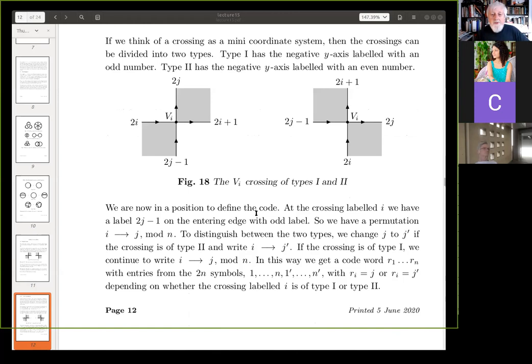So we are now in a position to define the code at the crossing labeled I, we have a label 2J minus one on the entering edge with odd label. So we have a permutation. I goes to J mod N. To distinguish between the two types, we change J to J dashed if the crossing is of type two and write I goes to J dashed. And if the crossing is of type one, we continue to write I goes to J. So it's not really a permutation. It's an embedding from N symbols to two N symbols. Okay. So we get a code word corresponding to this map. Okay.